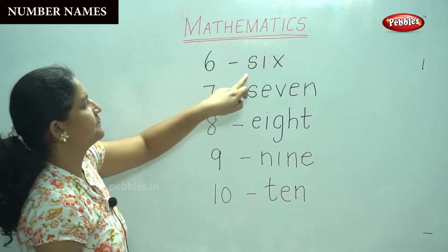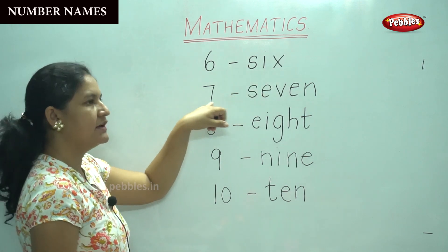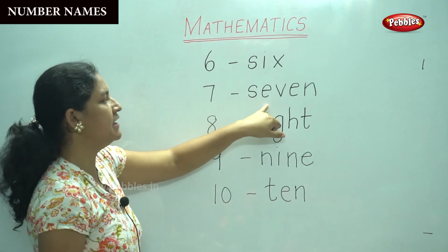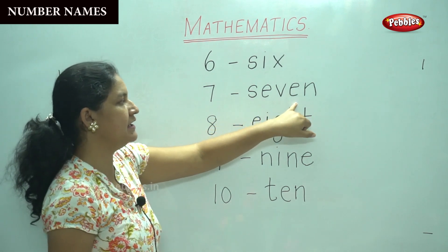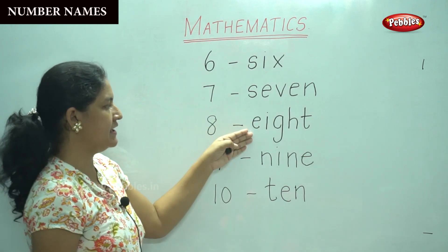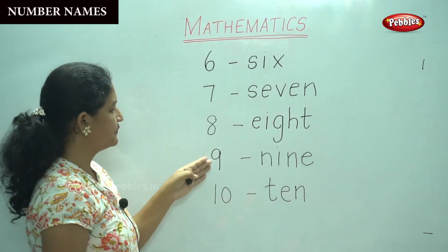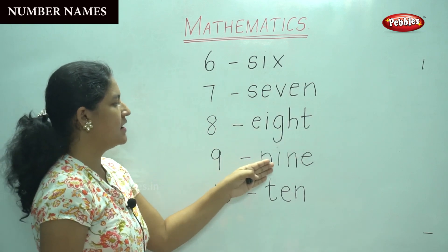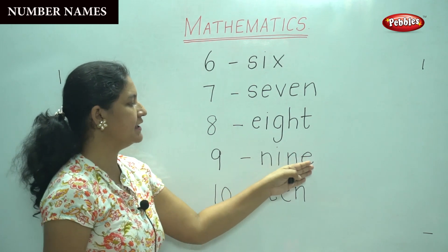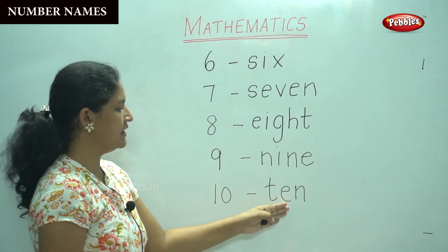7, 6: S-I-X, 6. 7: S-E-V-E-N, 7. 8: E-I-G-H-T, 8. 9: N-I-N-E, 9. 10: T-E-N, 10.